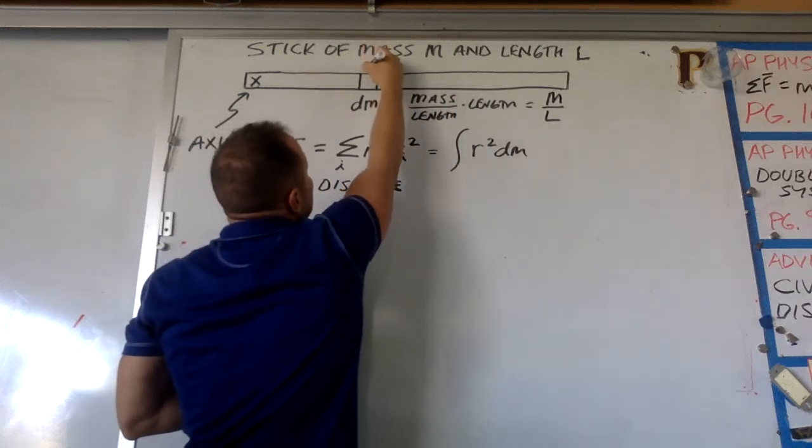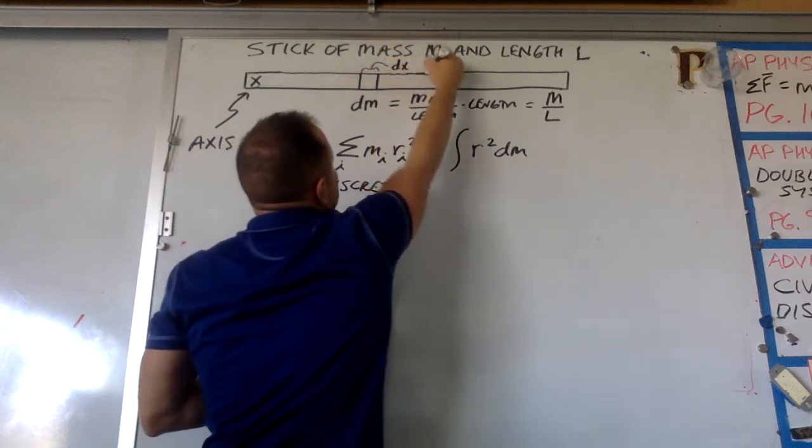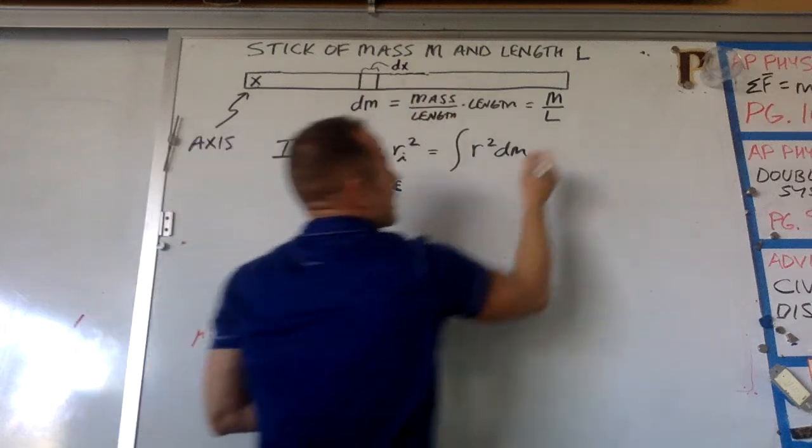But then the length of this thing, this itty bitty distance here, that itty bitty distance, we're going to call dx. It's a tiny little excursion in length.